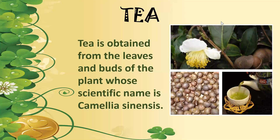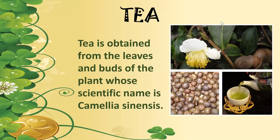Next is cotton. Where do we get cotton? You see a cotton plant — it is an enclosed bud at first, but when it grows it gives out cotton which is then transformed into yarn or thread and converted into cloth. The clothes we wear in summer to keep ourselves cool are made from the soft fluffy fiber that grows in a boll or protected cover around the seeds of the cotton plant.